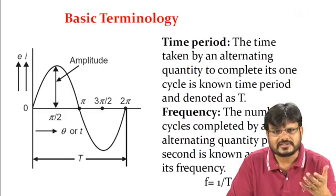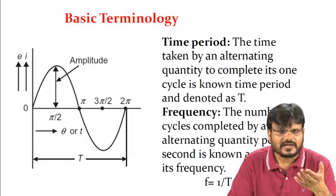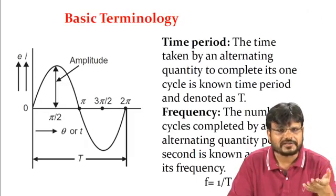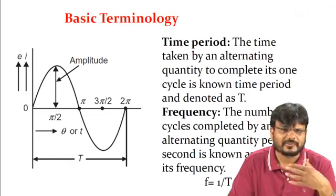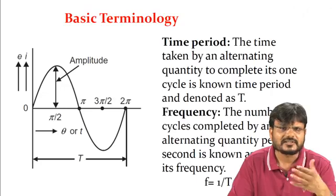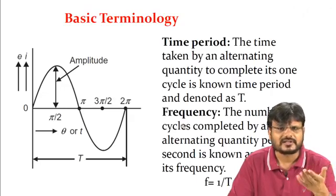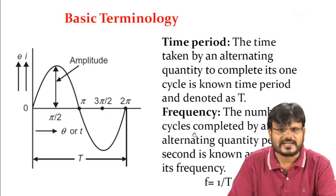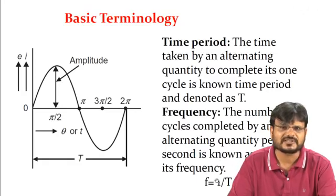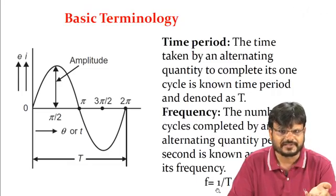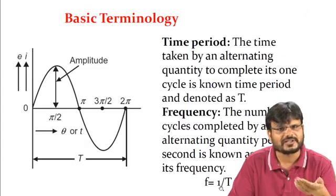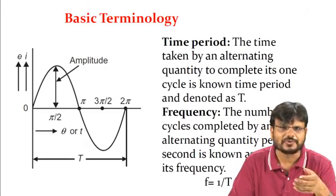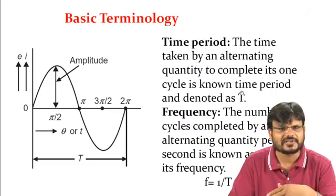The next term is frequency. The frequency of AC supply in India is 50 Hz, and in the USA it is 60 Hz. The number of cycles completed by an alternating quantity per second is known as its frequency. Frequency f is equal to 1/T — it is the reciprocal of time period. The unit of frequency is hertz, and the unit of time period is seconds.